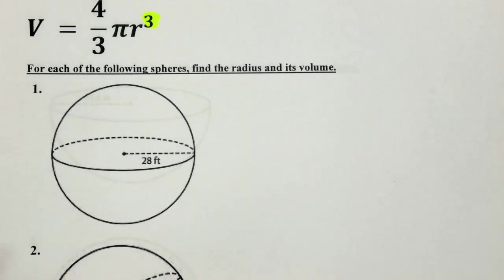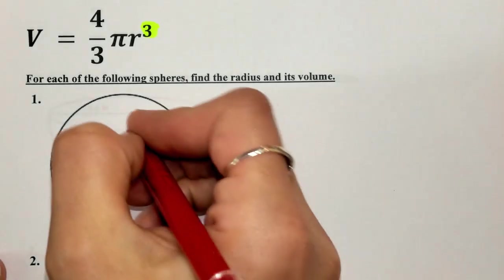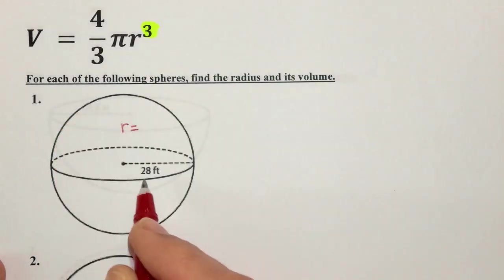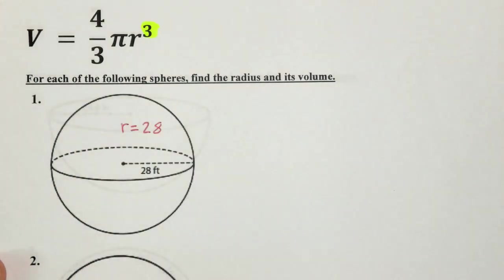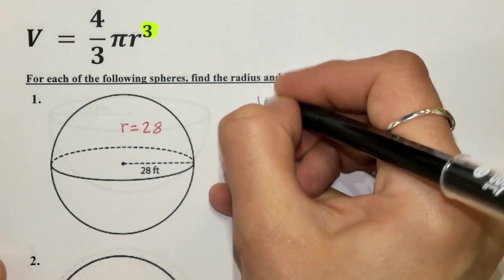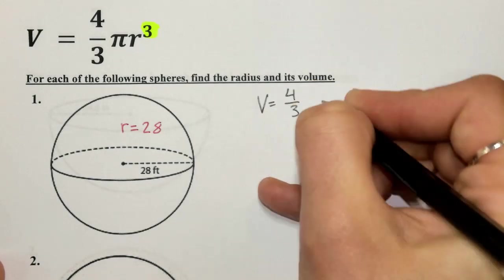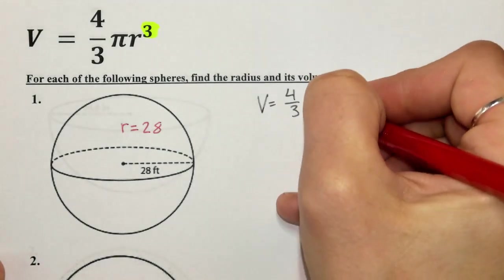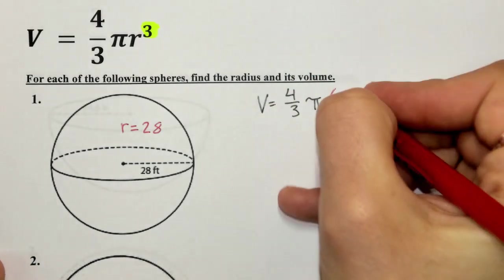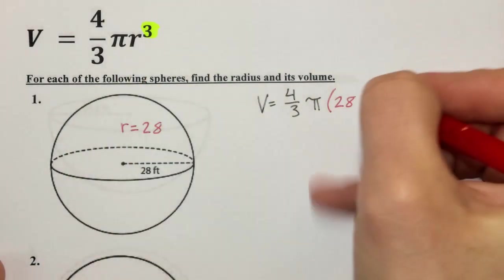The only thing we need from our image for our formula is the radius. Here, the radius is given to us — it's 28. So we plug into the formula: four over three, then pi, then our radius in parentheses. We have 28, and we need to cube it.